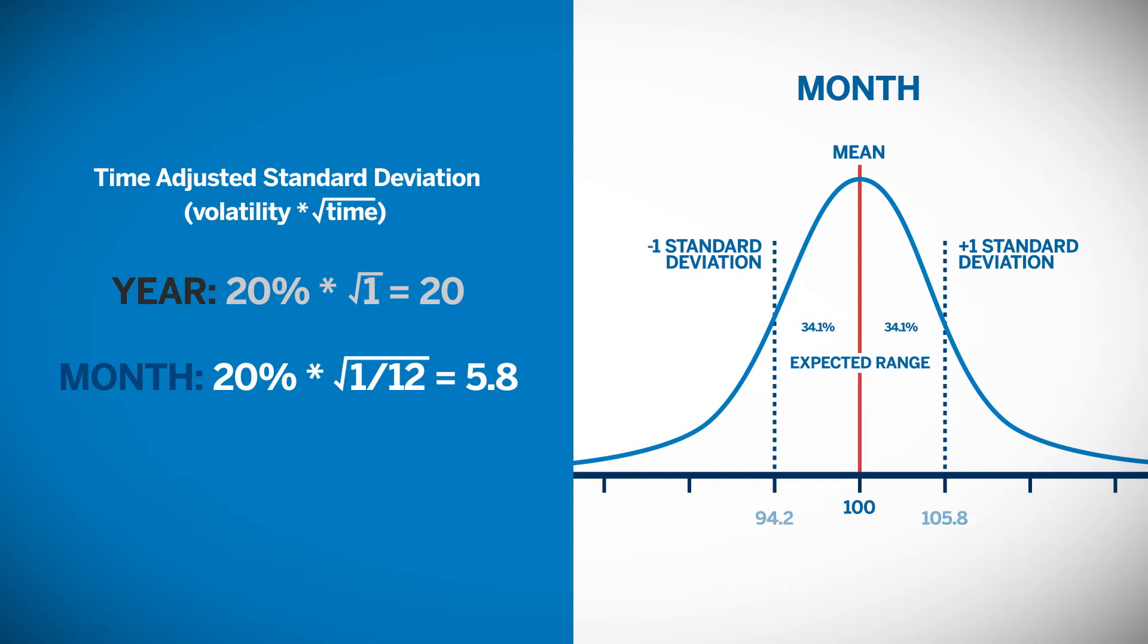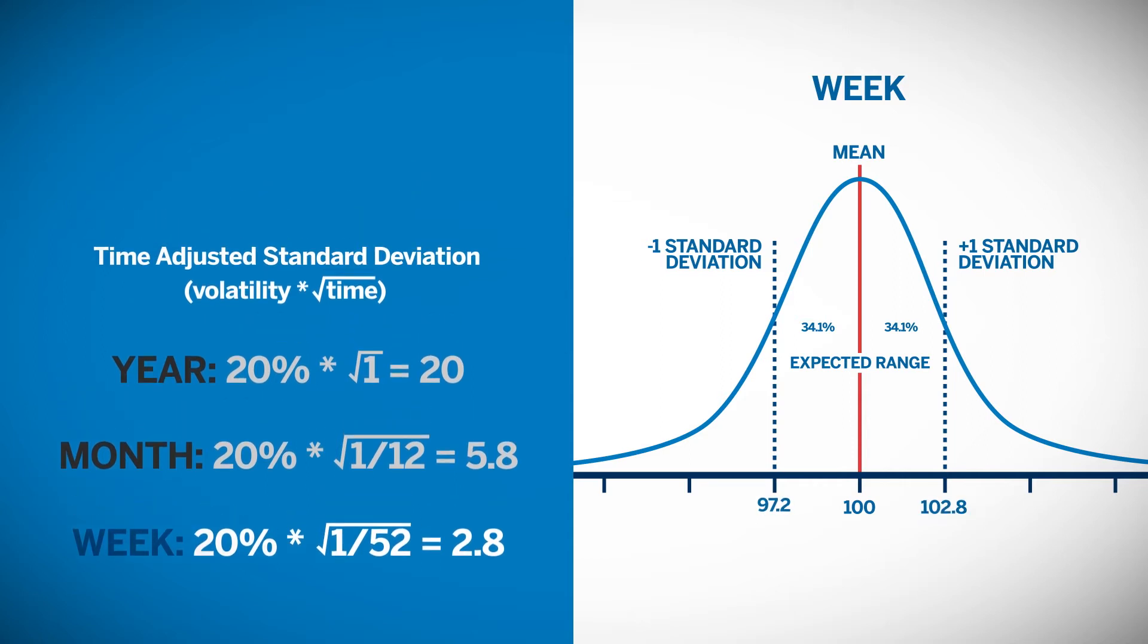For a one-week period, the standard deviation would be 20% times the square root of 1/52nd. A one-standard deviation range for a week would be 97.2 to 102.8.